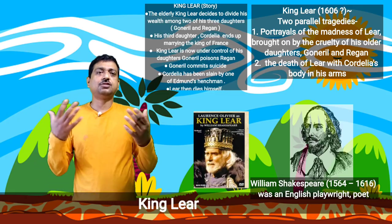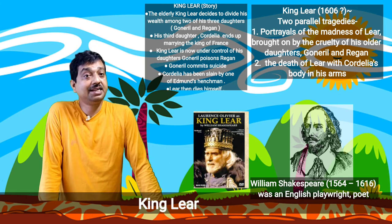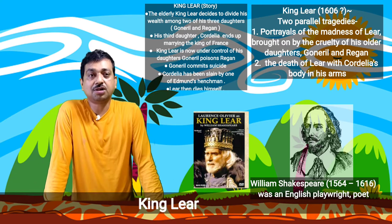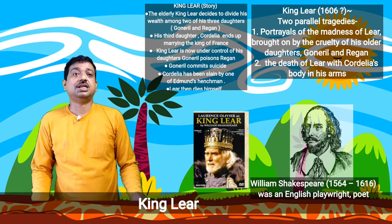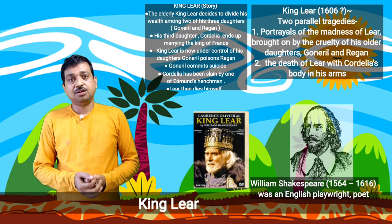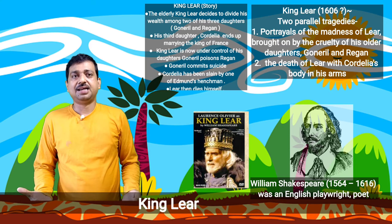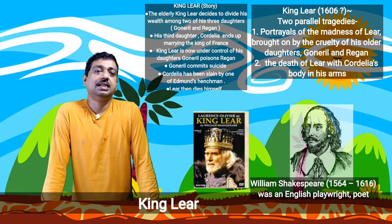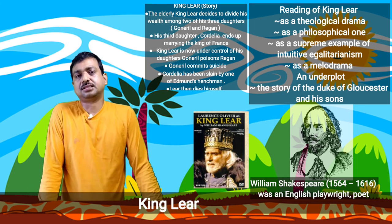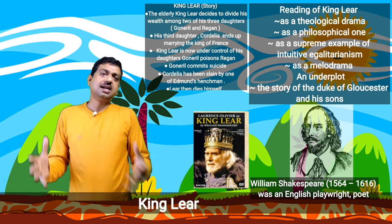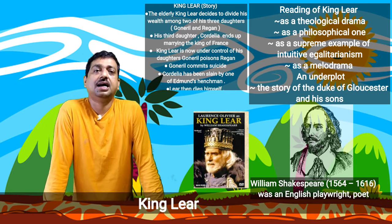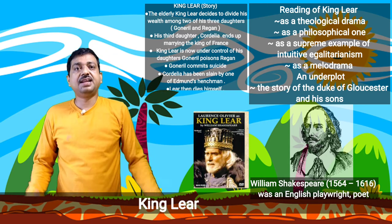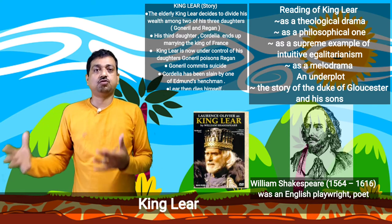King Lear has two parallel tragedy portrayals: the madness of Lear, brought on by the cruelty of his elder daughters Goneril and Regan, and the death of Lear with Cordelia's body in his arms. At its core it is a family drama, but it is also a permanent tragedy leading us into the greater relationship between father and daughter. King Lear can be read in various ways — as a theological drama, a philosophical one, a supreme example of Shakespeare's intuitive egalitarianism, or even as a melodrama lifted toward tragedy only by its superb poetry.